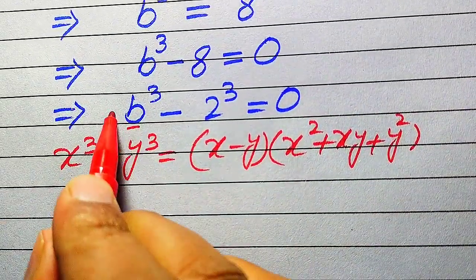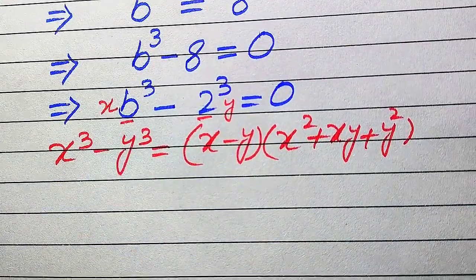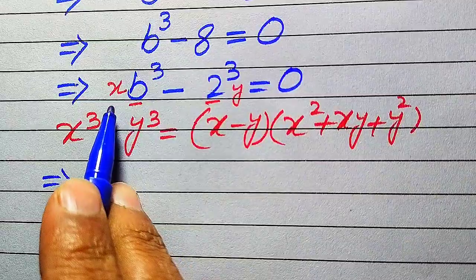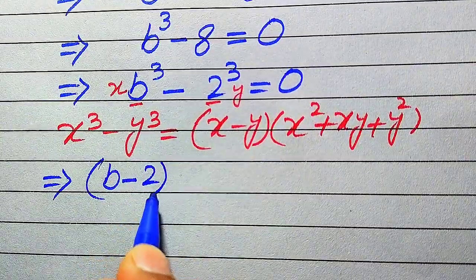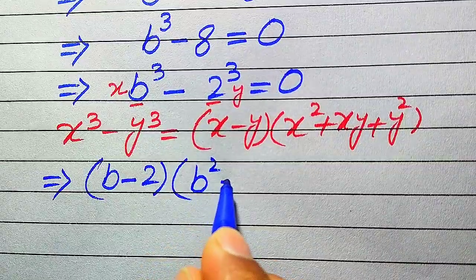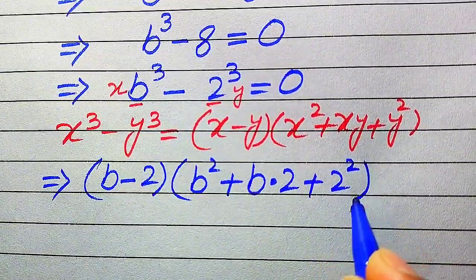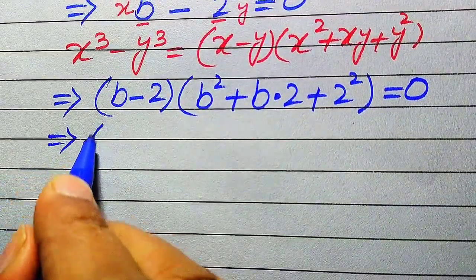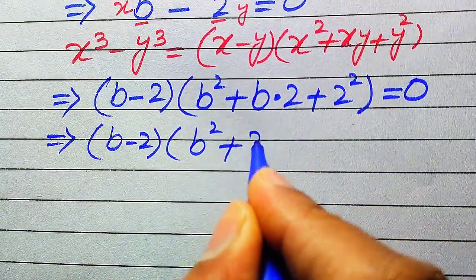You see here the base of this term is our x and the base of this term is our y. We need to substitute the values of x and y in this equation. The value of x is b and the value of y is 2. Substituting, it becomes (b minus 2) times (b squared plus b times 2 plus 2 squared) equals to 0.